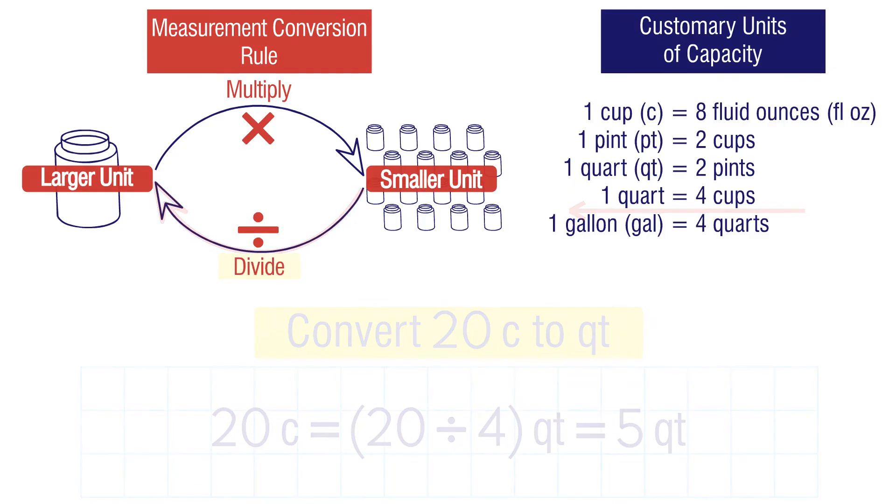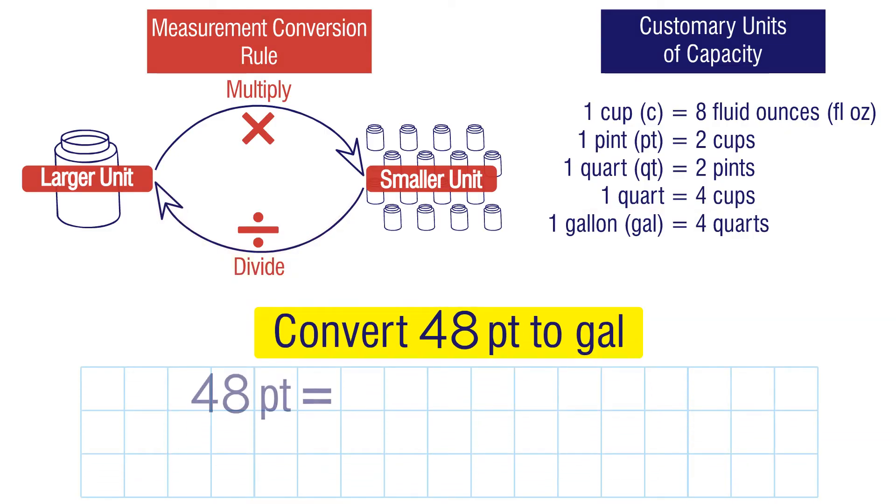Let's try a different example. Convert 48 pints to gallons. This is a two-step problem. First, we need to convert pints to quarts. Then we're going to convert quarts to gallons.